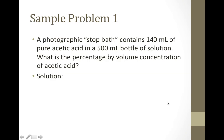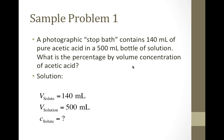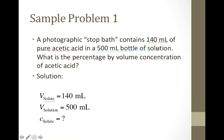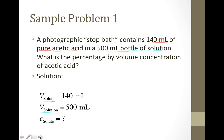Let's try a sample problem. A photographic stop bath contains 140 mL of pure acetic acid in a 500 mL bottle of solution. What is the percentage by volume concentration of acetic acid? Remember, we always want to use full GRAFS to solve these problems. Breaking it down: 140 mL of pure acetic acid is our solute, so volume of solute = 140 mL. It's in a 500 mL bottle, so volume of solution = 500 mL. We're solving for concentration. Take a moment to write out the equation and plug in your values.